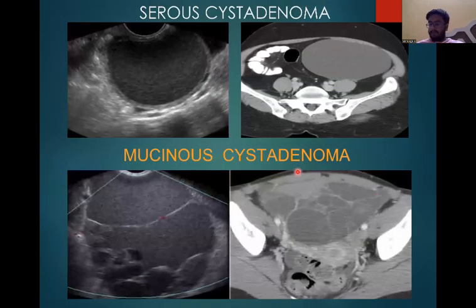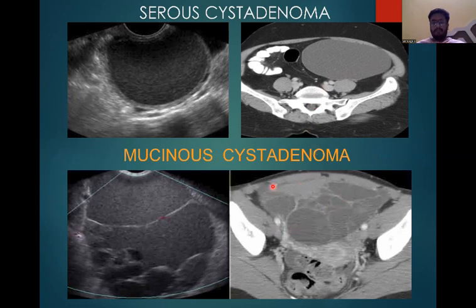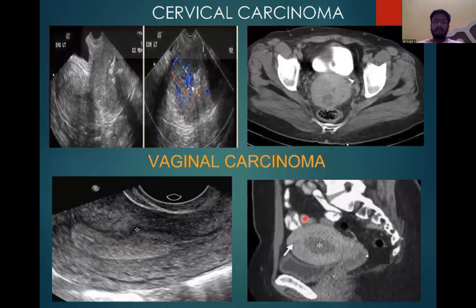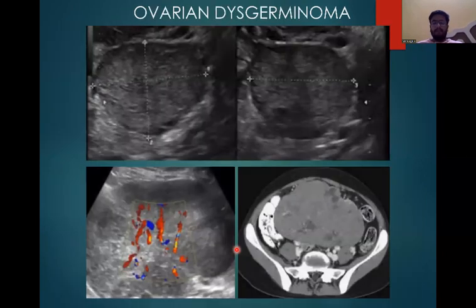Serous cystadenoma on CT appears as a multilocular cystic mass with homogeneous attenuation within regular cyst walls. This is a large cystic adenomatous mass with multilocular appearance involving the pelvic region. Serous representations of ovarian carcinoma on ultrasound are less conspicuous than on CT scan. Cases of ovarian carcinoma and dysgerminoma are also presented.